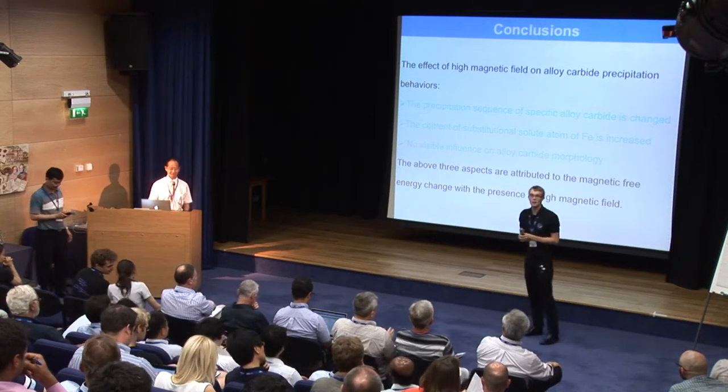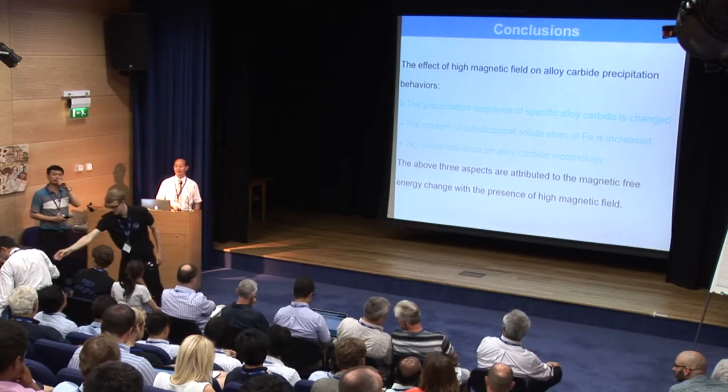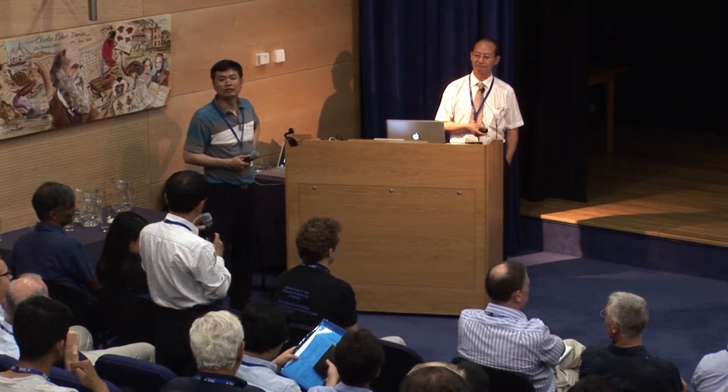Are there any questions? Professor Wu, I'm very interested in your talk. Regarding your third conclusion — no visible influence on the austenoid carbide morphology — I'm thinking that when we temper martensite, we always have three variants of carbide, and for tempered bainite maybe also two variants. But in your case, under the magnetic field, we would always expect this to reduce the number of variants. What is your result exactly?